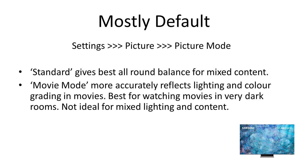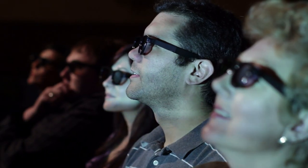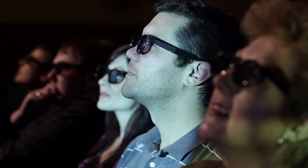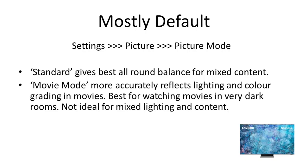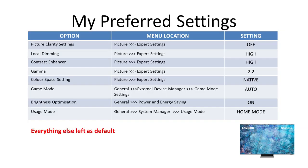For many people, leaving the settings just as they are should work fine — Samsung do a great job of a default, well-balanced picture. For the picture mode settings, there are only two to consider. I still think Standard gives the best all-round balance for mixed content. Many people recommend Movie mode, which gives that cinema look and more accurately reflects the lighting and colour grading of movies — best experienced in a dark room. My TV sits in the corner of a well-lit room backlit by a large window, and I watch a lot of mixed content, so Standard works best for me.